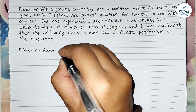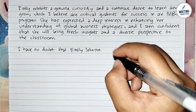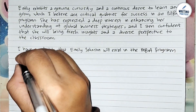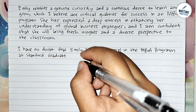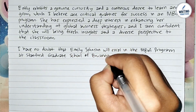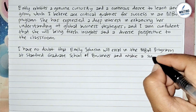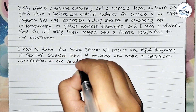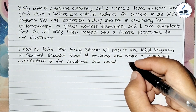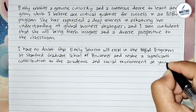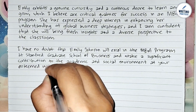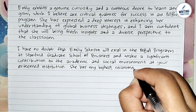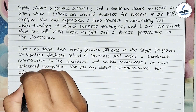In the fifth paragraph, write the overall recommendation. Reaffirm your strong recommendation for the candidate's admission. For example: 'I have no doubt that Emily Johnson will excel in the MBA program at Stanford Graduate School of Business and make a significant contribution to the academic and social environment at your esteemed institution.' After that, write the summary of confidence — summarize your confidence in the candidate's ability to excel. You can write: 'She has my highest recommendation for admission to your program.'